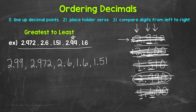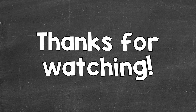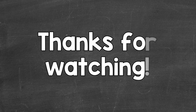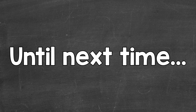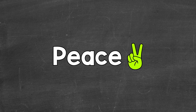And now we are in order from greatest to least. There's how to order decimals. Just remember: line up the decimal points, use placeholder zeros, and then compare digits from left to right. I hope that helped. Thanks so much for watching. Until next time, peace.